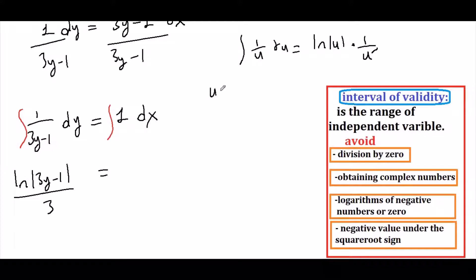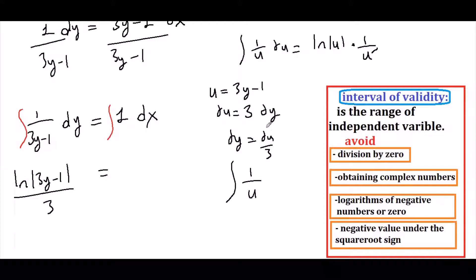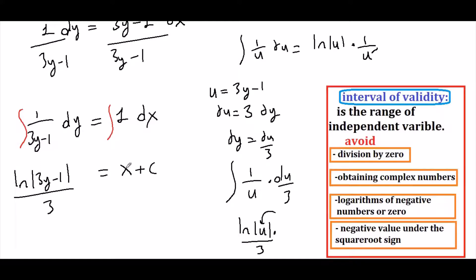Let u equal 3y minus 1. Then du equals 3 dy, so dy equals du over 3. Placing everything in terms of u, we obtain 1/u with du over 3. The antiderivative of 1/u is ln|u|, divided by 3. Bringing u back gives ln|3y minus 1| times 1/3. On the right-hand side we obtain x plus c, since the antiderivative of 1 with respect to x is x, and we place c on the x side.